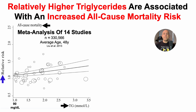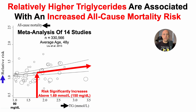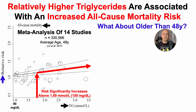This study was a meta-analysis of 14 studies that included more than 330,000 people with an average age of 48 years at the baseline visit. Once triglycerides went above 1.69 millimolar, or 150 milligrams per deciliter, all-cause mortality risk significantly increased.